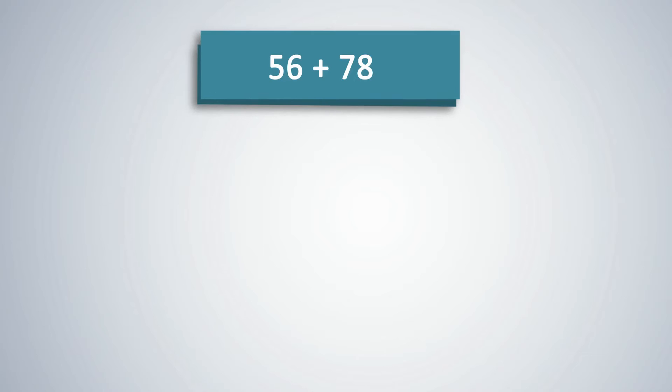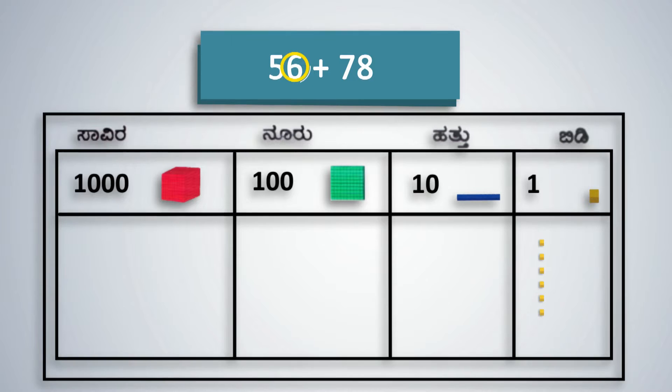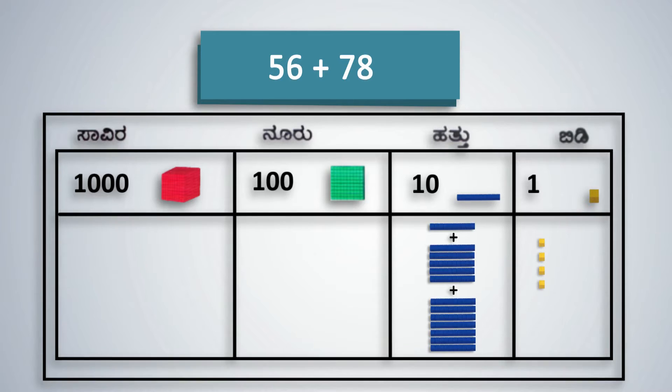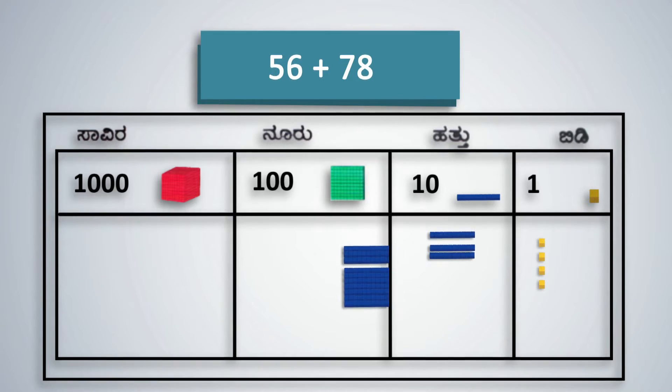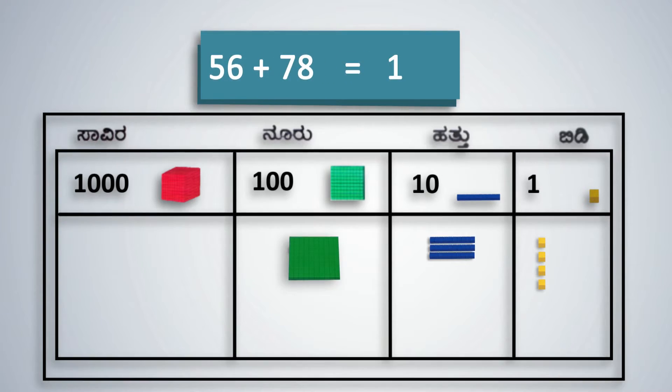Ask students to add 56 and 78 on the place value mat. 6 ones plus 8 ones gives 1 ten and 4 ones. When 5 tens, 7 tens, and 1 ten are added, we get 13 tens. So now we replace 10 blue rods with 1 green plate of 100 and move 1 place to the left. 56 plus 78 is 1 green plate of 100, 3 blue rods of 10s, and 4 yellow cubes of 1s.